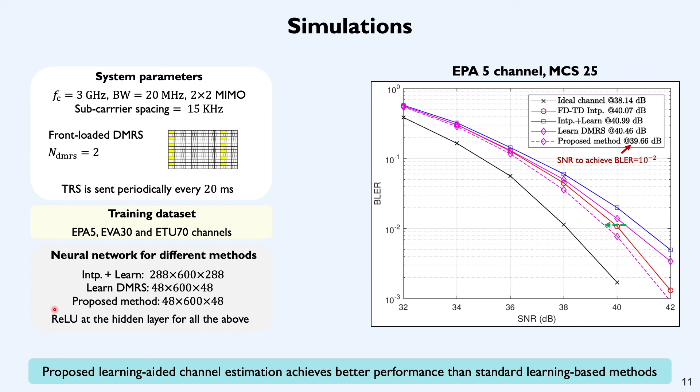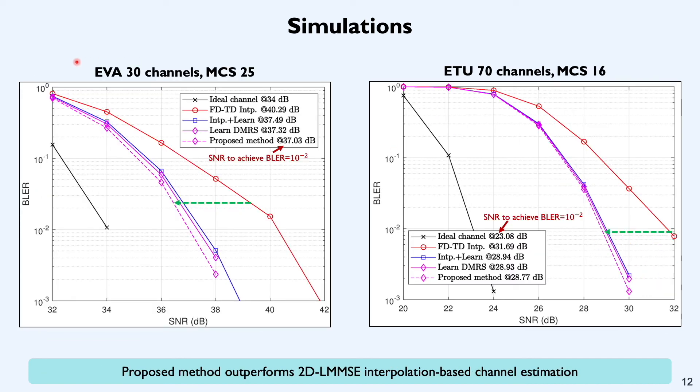Here is the configuration of the neural networks that we've used. We've used ReLU activation for all the methods and as you can notice from the figure on the right, our approach shown over here by these pink dashed lines performs better than conventional techniques based on classical linear interpolation or learning-based methods that simply concatenate linear interpolation techniques with the neural network. And here is the performance for EVA30 channels and ETU70 channels. We use a different MCS level. It was 25 for EPA5 evaluation and 16 for ETU70 evaluation. In both cases, you can notice that our method performs much better than the legacy linear frequency time interpolation technique.